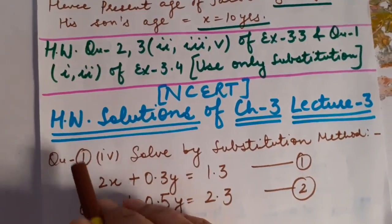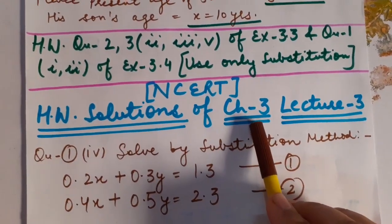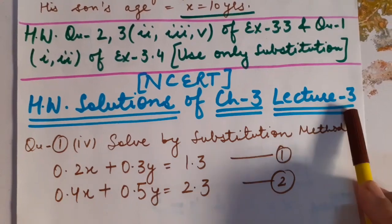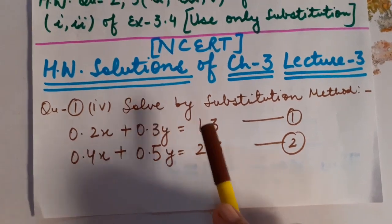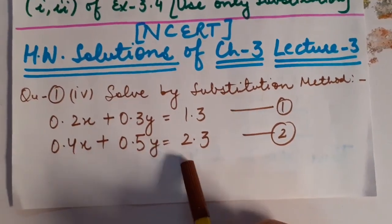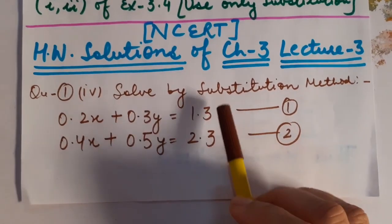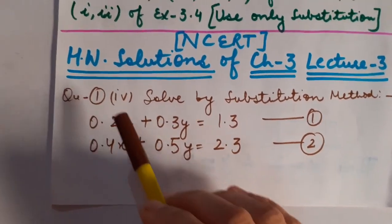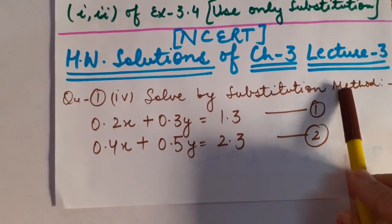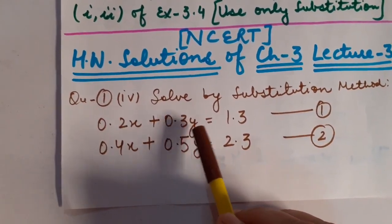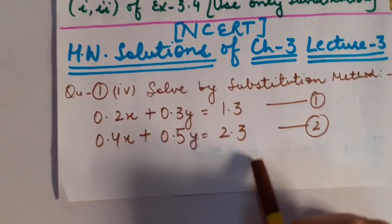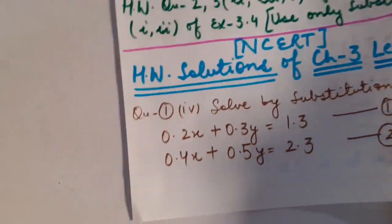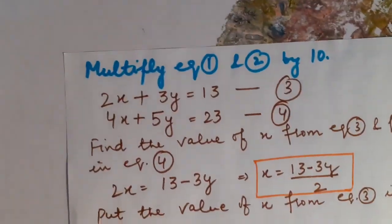Now let us discuss the homework question solutions of chapter number 3, exercise 3.3, lecture number 3. The questions belong to NCERT. I gave you only 4 parts to do, and all parts were very simple. But I found one part a little bit difficult — because there is a decimal present in it. So, this is question number 1, fourth part, solved by substitution method: 0.2x plus 0.3y = 1.3 and 0.4x plus 0.5y = 2.3.